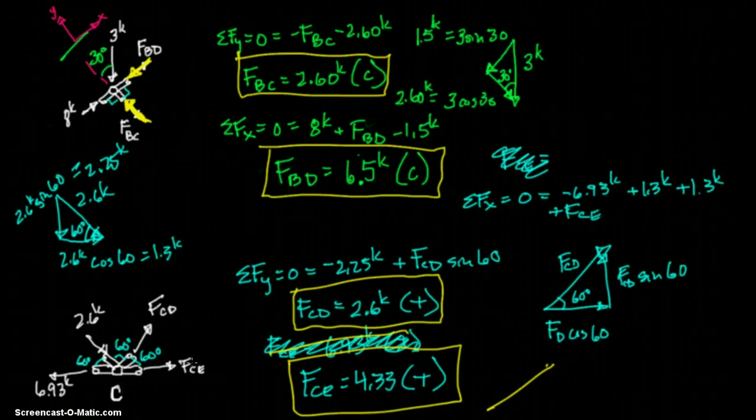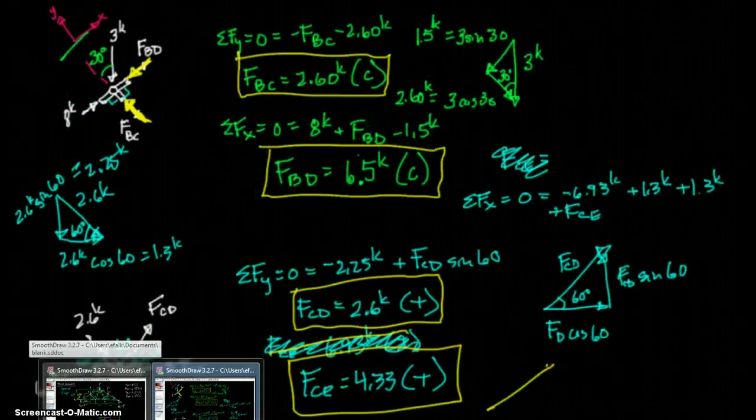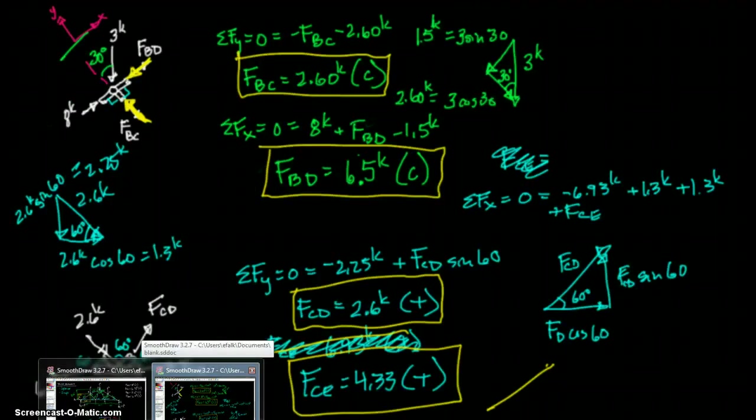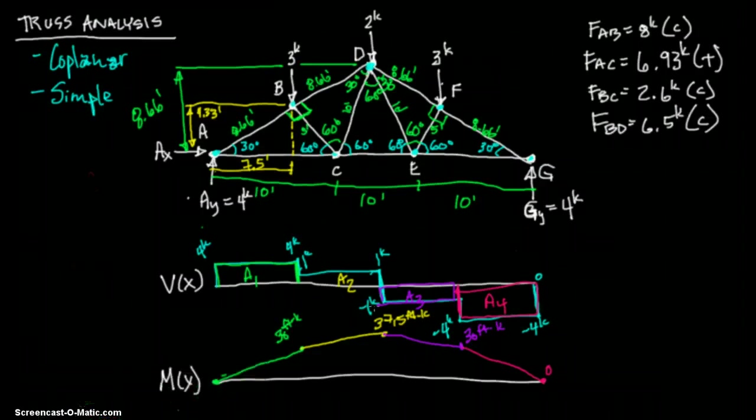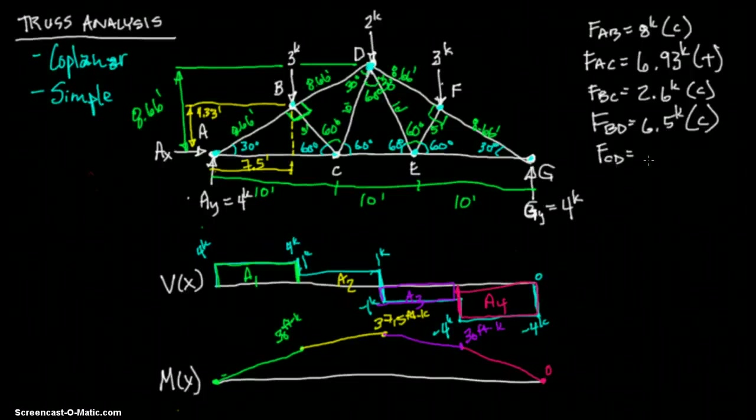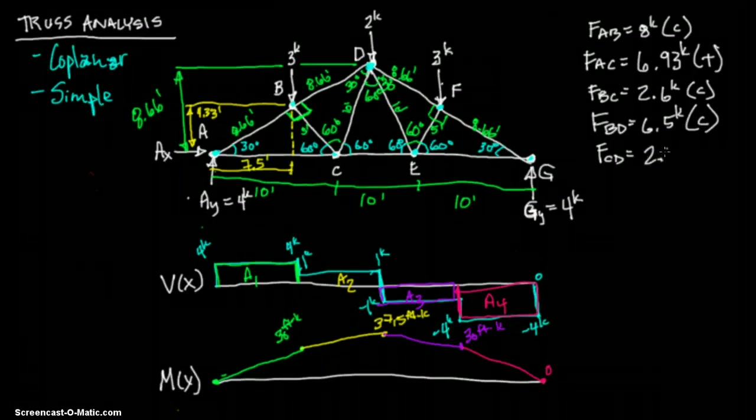So FCE equals 4.33 for each side. And now that we've figured out all this, let's go back to and record it like we had been doing on the other sheet. So let's look at it again - FCD equals 2.6 and FCE equals 4.33. Alright, so FCD equals 2.6 and that was in tension I believe.